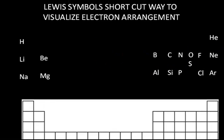Lewis symbols are a shortcut way to visualize electron arrangements, and once we visualize these electron arrangements, we can better predict the types of ions that would be formed. There's a mild typo here — the sulfur should be placed differently. This shows just a few of the representative elements.